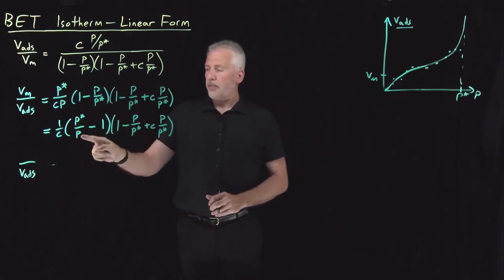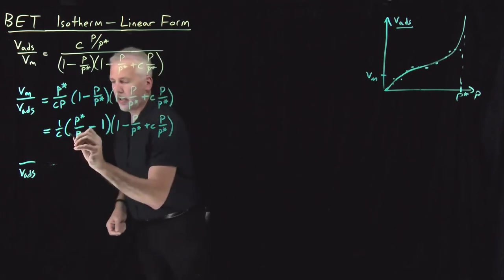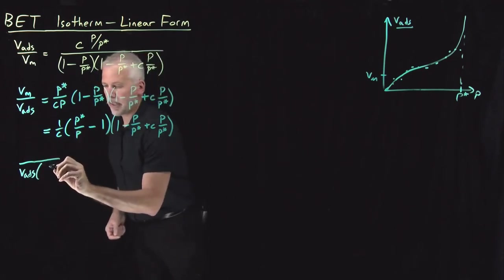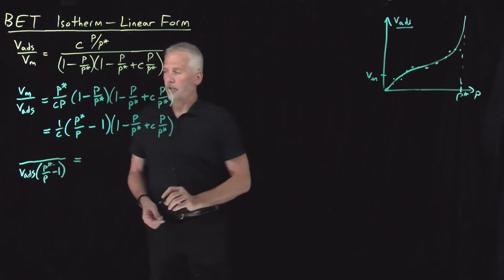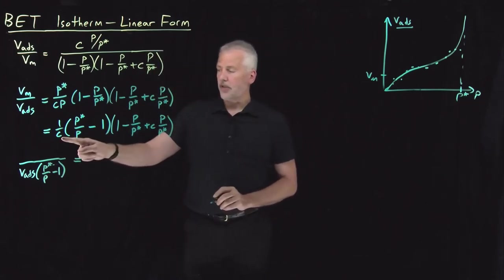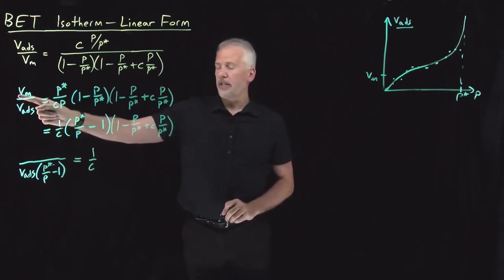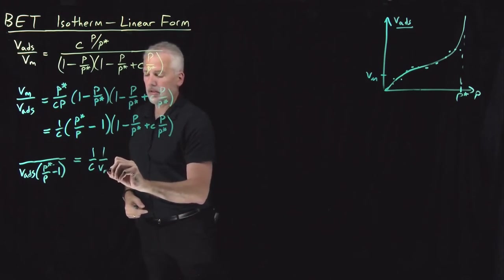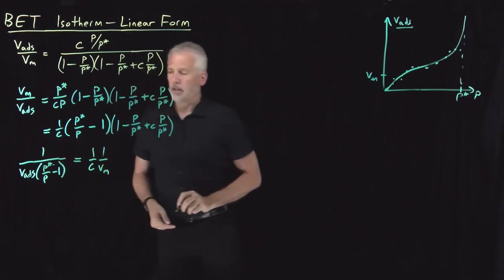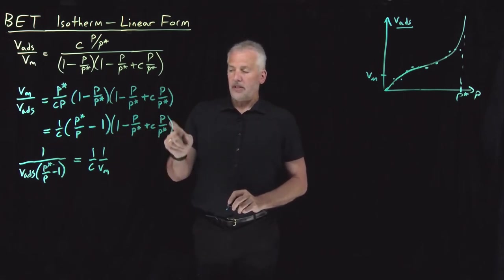This term, P star over P minus 1, let me bring that over to the left-hand side. So when I do that, it appears in the denominator. So now, on the right-hand side, I've still got the 1 over C. I haven't written a numerator over here, because I actually want to take this monolayer volume and move that over to the right-hand side as well.